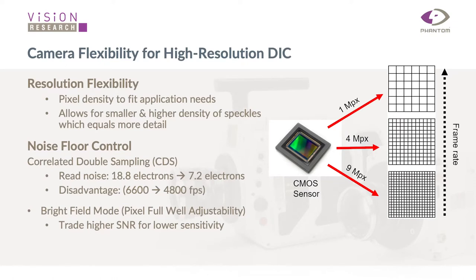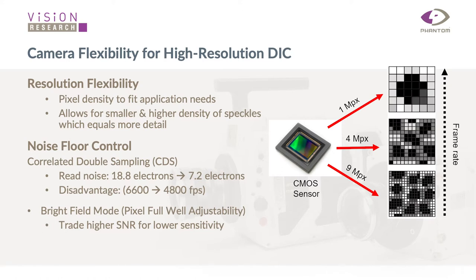Vision Research is developing cameras to meet the needs of a broad range of DIC users. One focus is providing really nice resolution flexibility — specifically spatial resolution, meaning how many speckles can you fit per unit area on your sample while still meeting the IDIC criteria of three to five pixels per speckle. We have sensors ranging from one megapixel all the way up to nine, meaning you can fit almost an order of magnitude more speckles on your sample compared to a one-megapixel sensor.